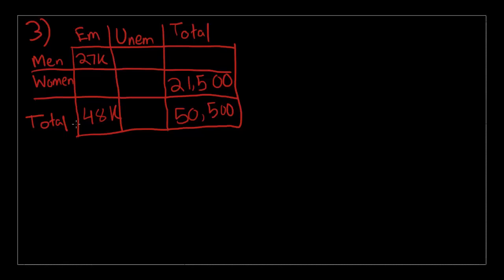So, now we just need to work backwards until we fill in the required cell. And we're looking for the unemployed women, so this is the women row, and this is the unemployed column. So, this is the cell that we are looking for.